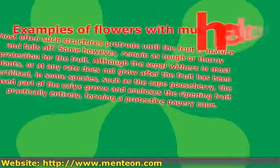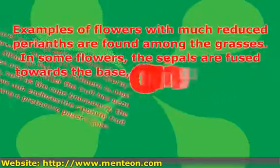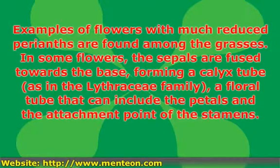Examples of flowers with much-reduced perianths are found among the grasses. In some flowers, the sepals are fused towards the base, forming a calyx tube — as in the Lythraceae family — a floral tube that can include the petals and the attachment point of the stamens.